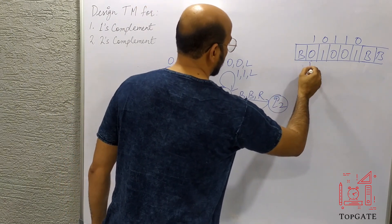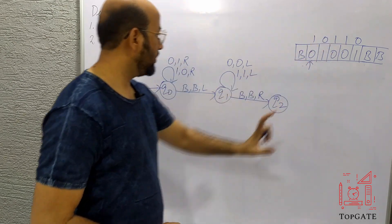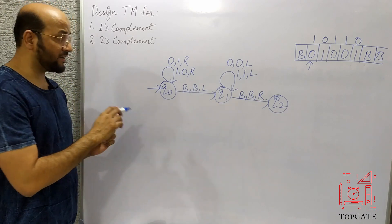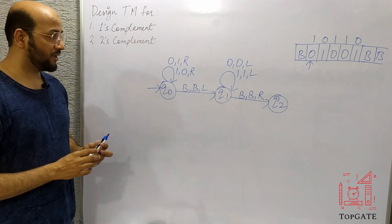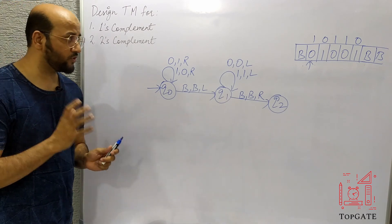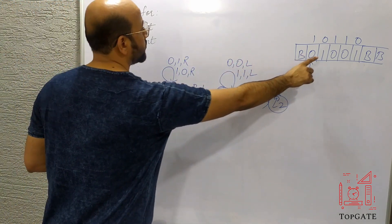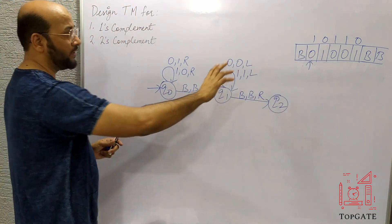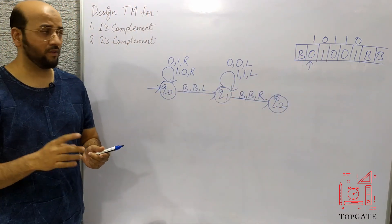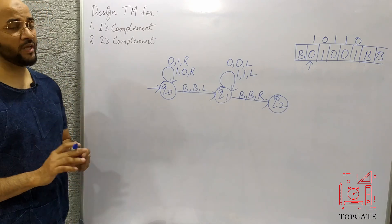From that blank, I take a right turn — keep it as blank and go right, transitioning to state q2. The pointer now points to the first digit, so the output 1 0 1 1 0 is displayed from there. There is no final state because this is a transducer — a Turing machine that changes a string from one form to another.